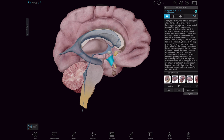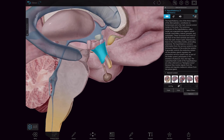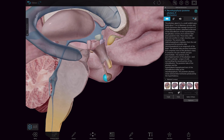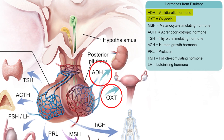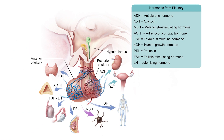Axons from the hypothalamus reach into the posterior pituitary where they release two hormones: oxytocin and antidiuretic hormone, for storage and later release.